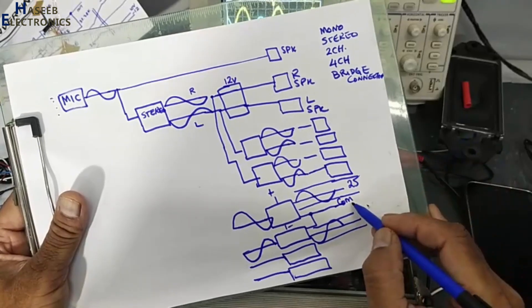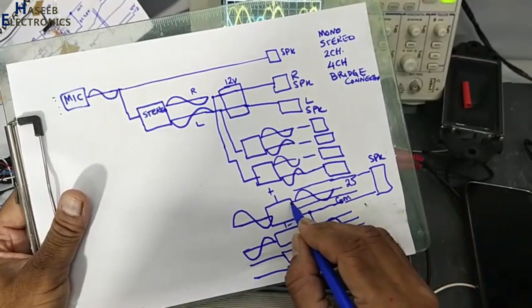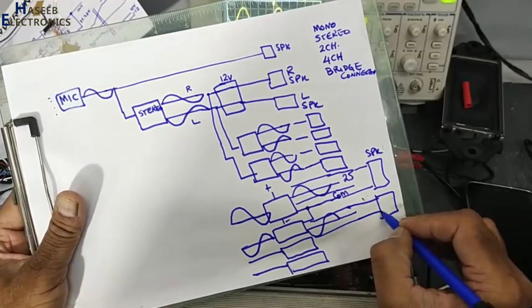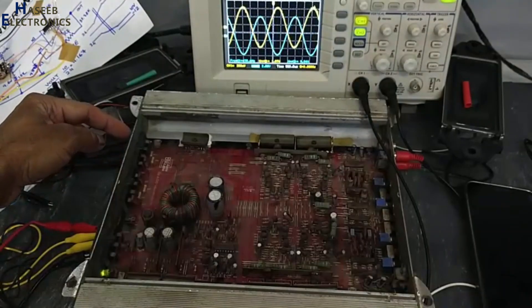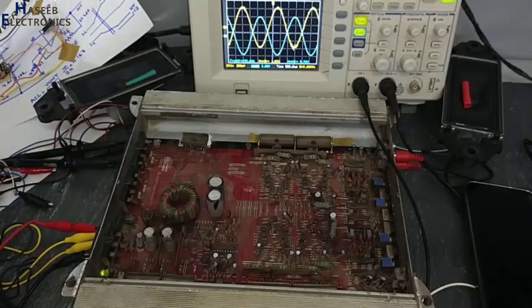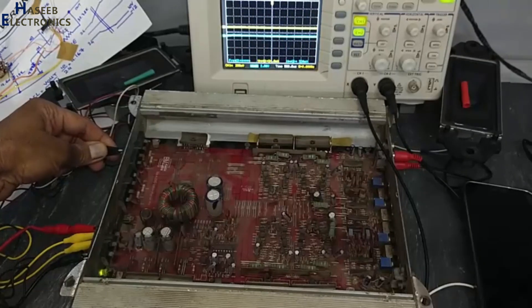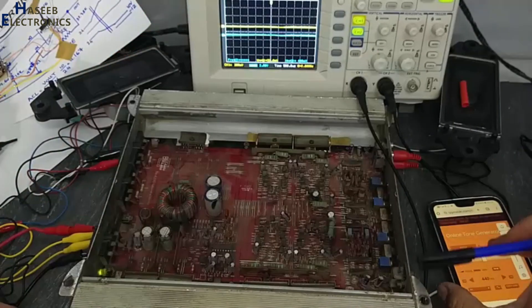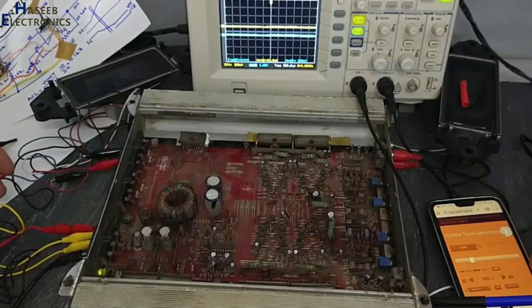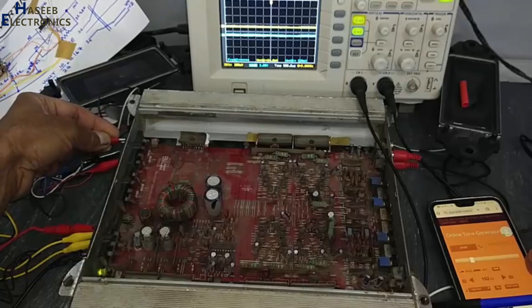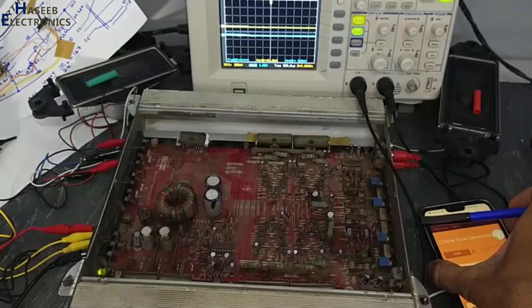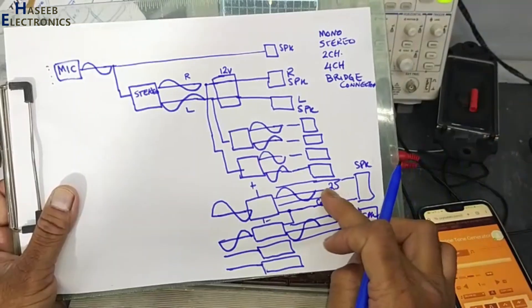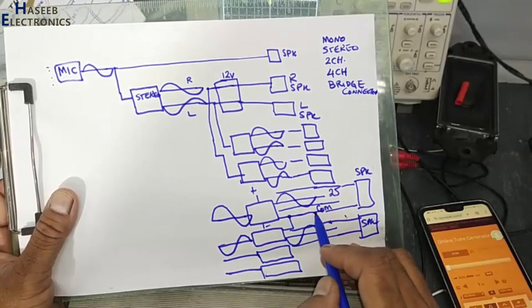This is normal connection when we connect one speaker here at positive out and common, then this common and this out. One out, one out, second out, center common pin. One speaker, one speaker at one channel, second at second channel. Both are opposite to each other. Each speaker is receiving from here to here, this side to this side.